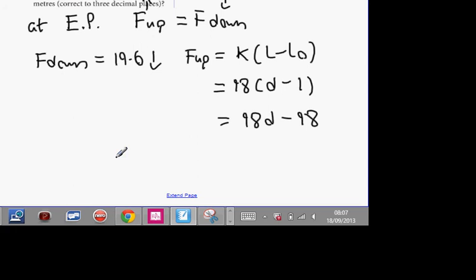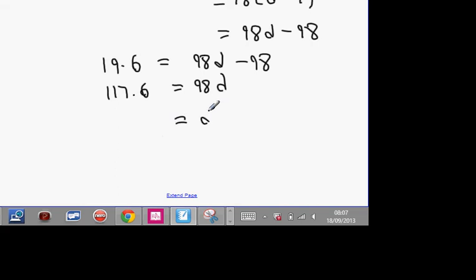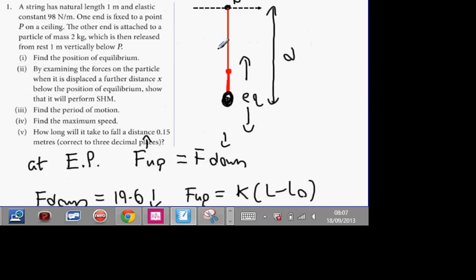So 9.8D minus 9.8. Now they both equal each other. Forces up equals forces down. So 19.6 will equal 9.8D minus 9.8. This answer has to be bigger than 1 because the total distance has to be bigger than the natural length which is 1. Bring it over, add it on. 9.8 plus 19.6 equals 117.6 equals 9.8D. Divide by 9.8 and we should get D equals 1.2 meters.